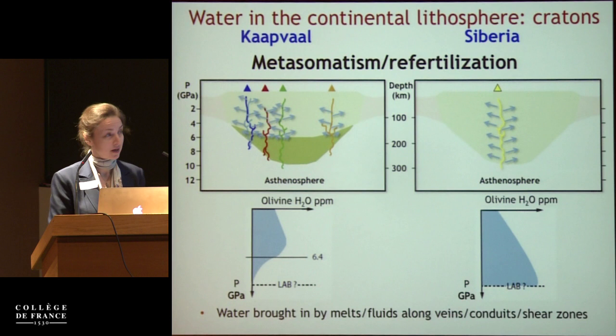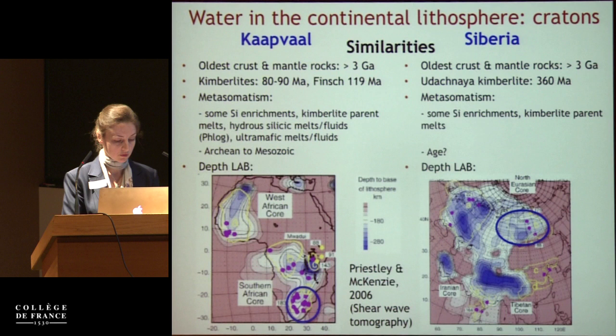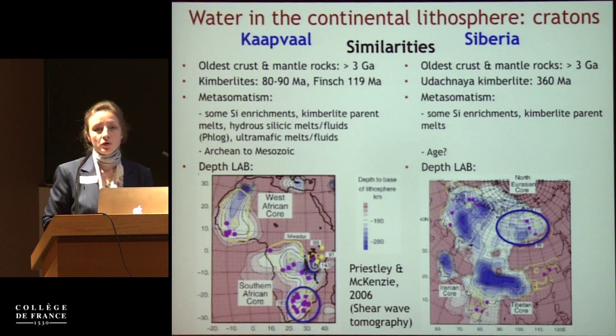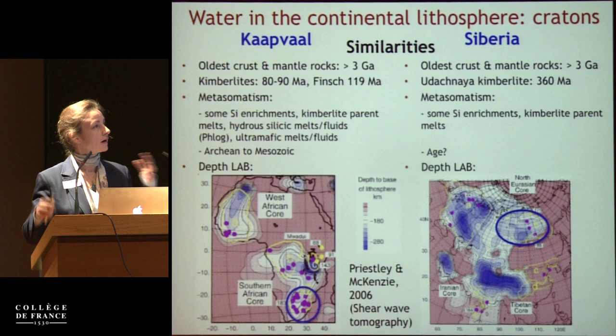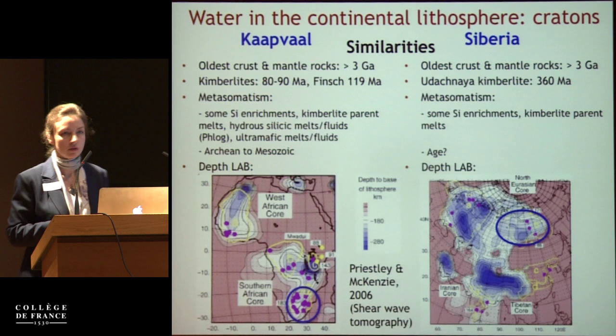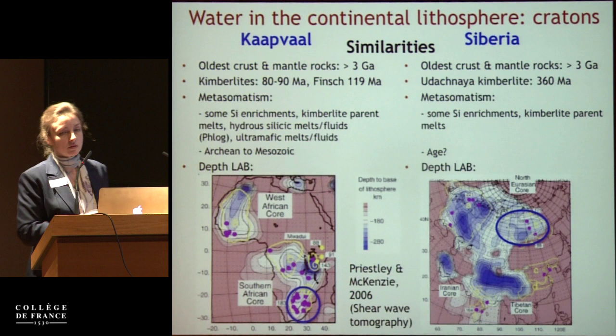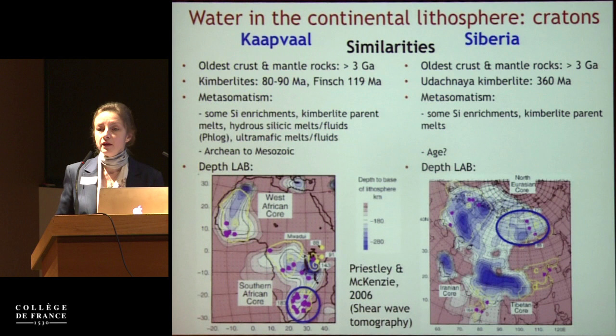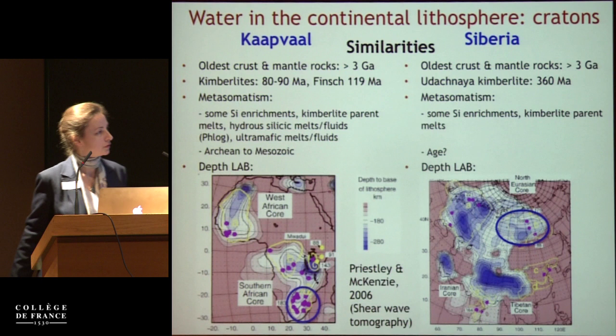Why are they different? I don't have a definitive answer, but we can look for differences between the two cratons. Both are old — some rocks are more than 3 billion years old. Both have extensive evidence for multiple metasomatic events of different compositions. Dating metasomatism is difficult, but in Kaapvaal events range from the Archaean to the Mesozoic. Both cratons still have a deep root of about 200 kilometers.